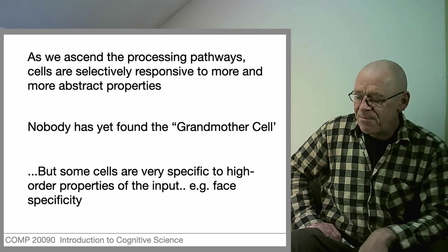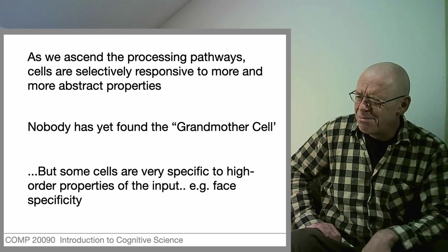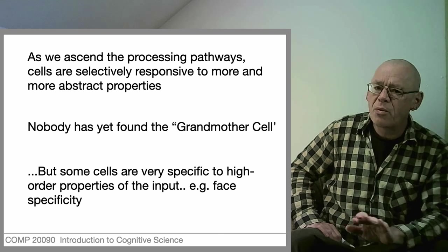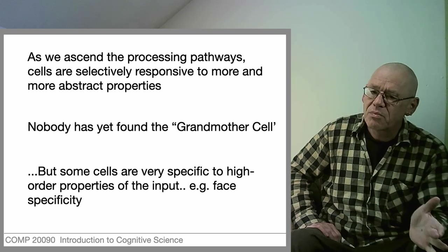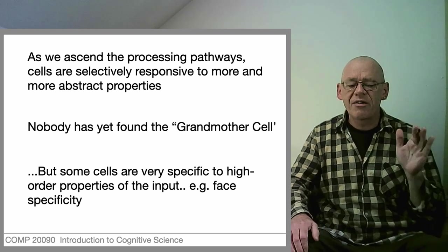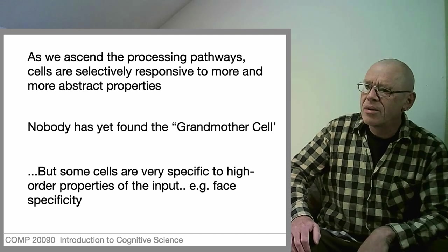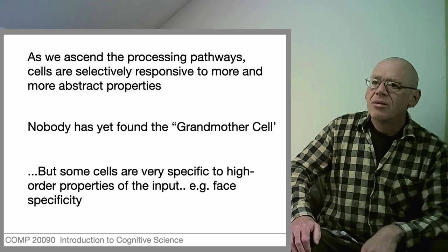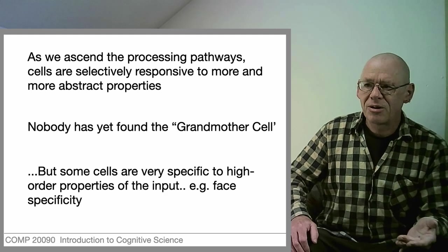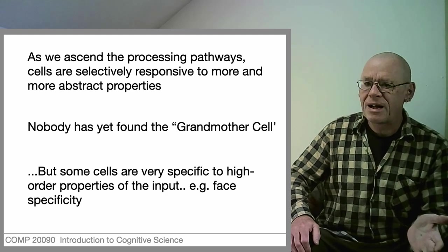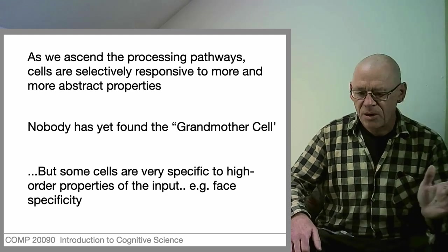That hasn't been found yet and it's a bit of a misleading way to think about things. But we have found cells whose response is very specific, including in one infamous experiment where some guy had a cell in his brain that responded selectively to images of Jennifer Aniston's face. I have no idea why.